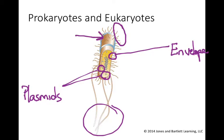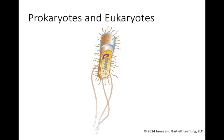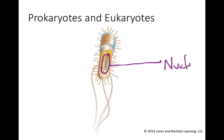We also have the chromosome. There is usually one chromosome; it's usually circular, and the region where it's located is known as the nucleoid. The nucleoid is not membrane-bound. It is simply a location where replication and transcription occur, and this is something that makes it distinct from the nucleus. The nucleus is a membrane-bound organelle that houses the DNA and where transcription occurs in eukaryotic cells.